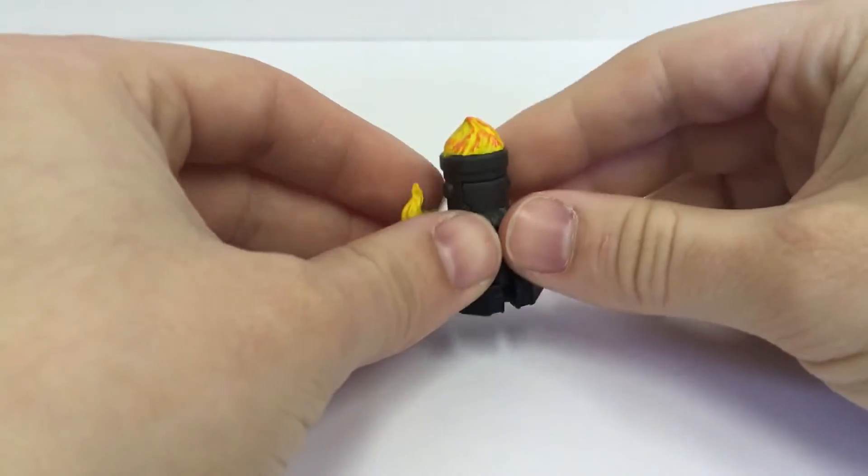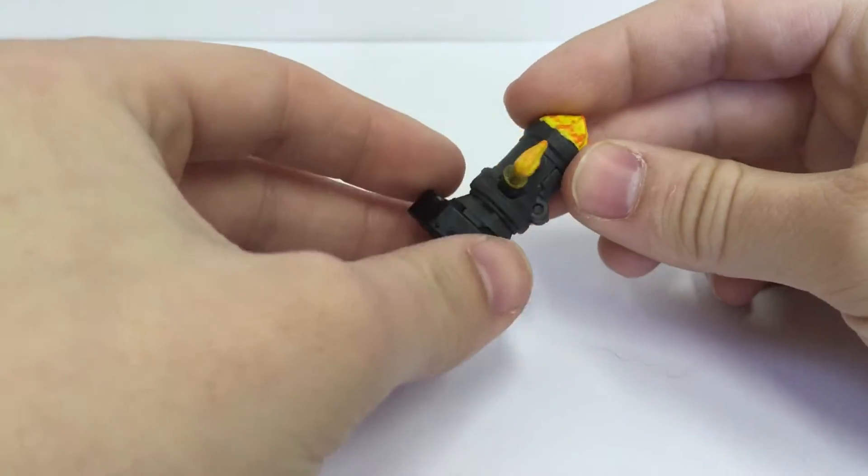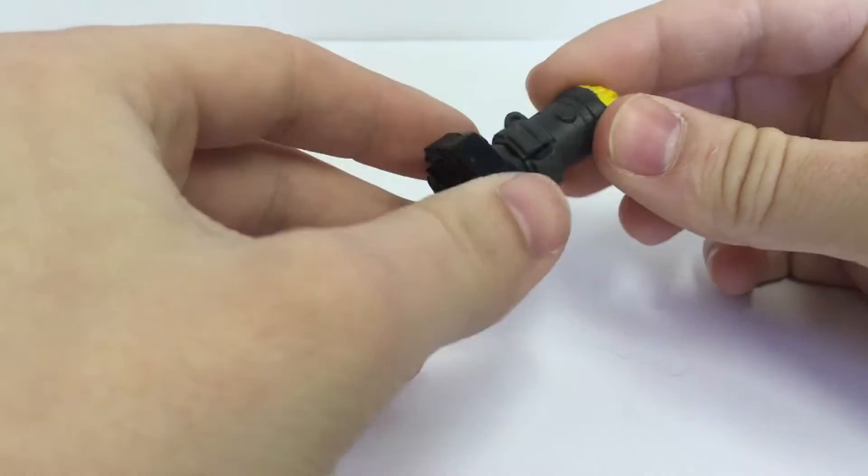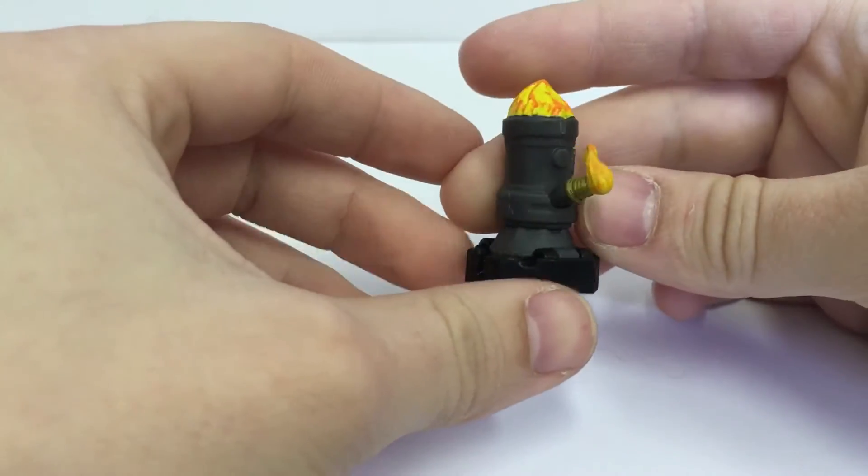Next up is the quickie review for Transformers BotBot Series 5, Dr. Flicker. Dr. Flicker here turns into a little Bunsen burner.